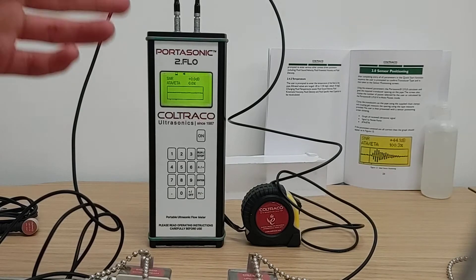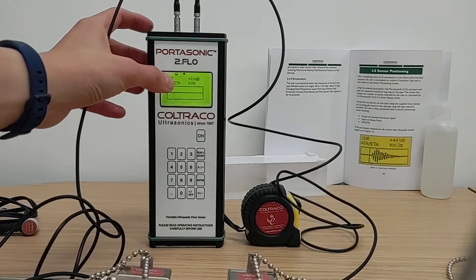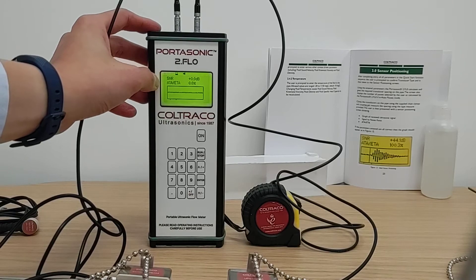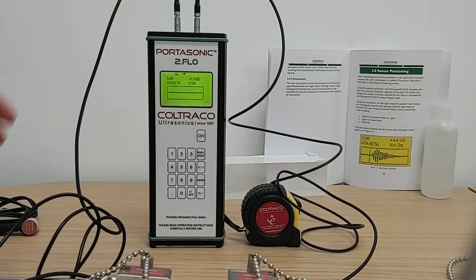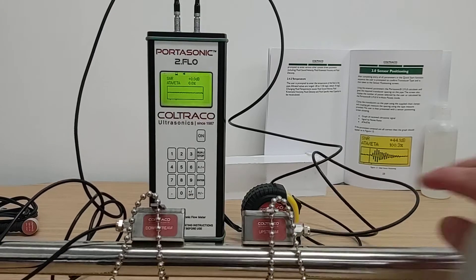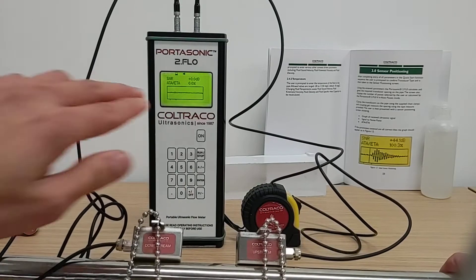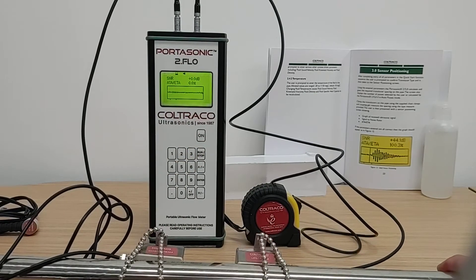Once you are onto the sensor measurement screen, you will see that there is the SNR which represents the signal-to-noise ratio. If your sensor is installed correctly and your pipe is filled with fluid, this value should be 25dB and above.